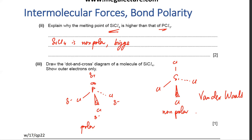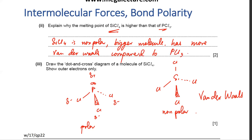Since SiCl4 is a bigger molecule, it has more van der Waals forces compared to the smaller PCl3 molecule, which is why SiCl4 has a higher boiling point. When molecules have only van der Waals forces, bigger molecules have greater intermolecular forces.